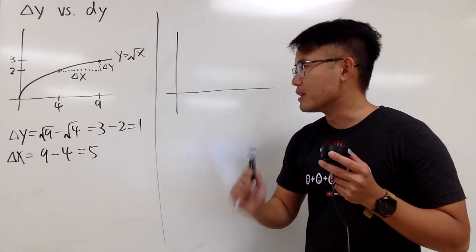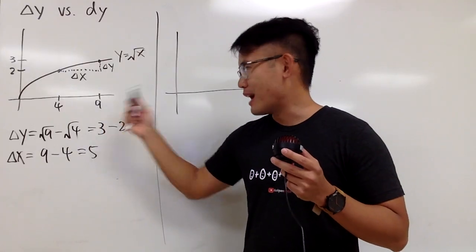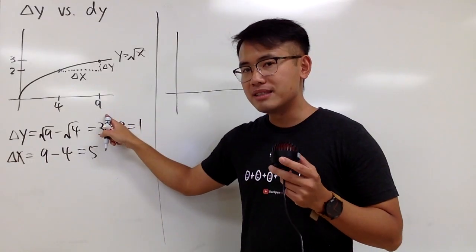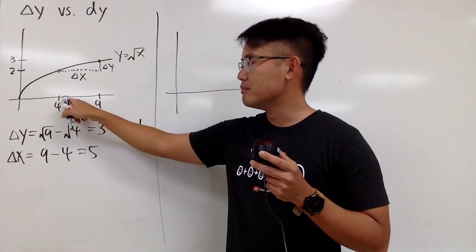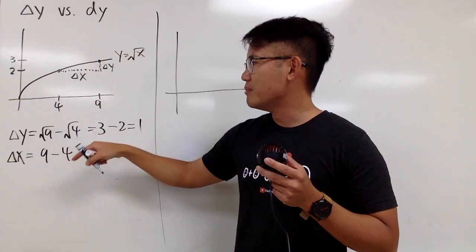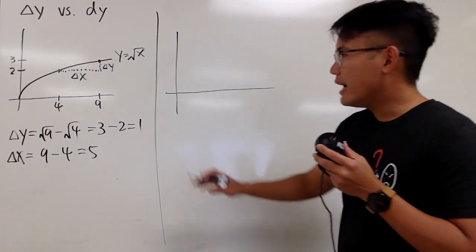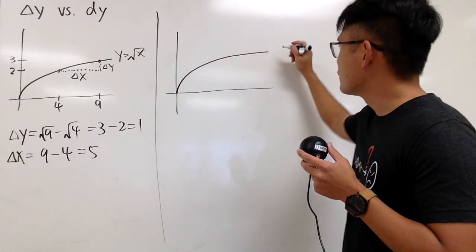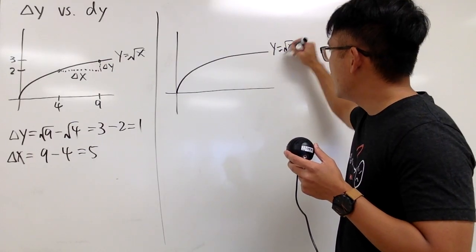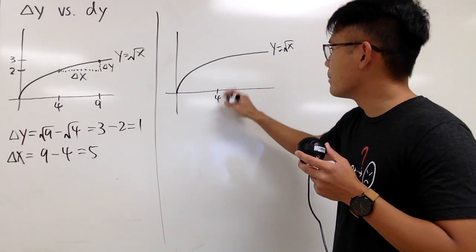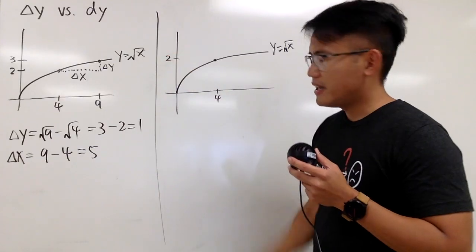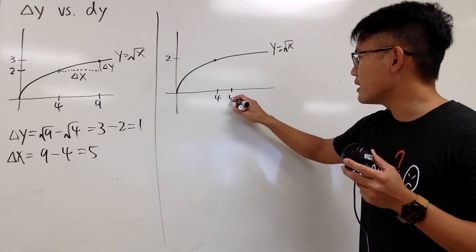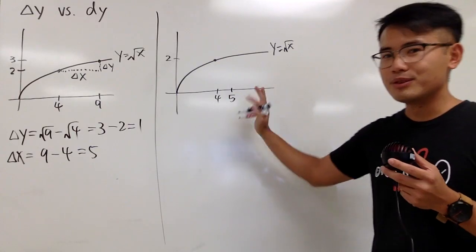This right here was so easy because I chose 9 on purpose to just make everything easy. And that's it. What if I didn't pick 9, but instead maybe I pick 5, maybe I pick 7? This is harder. And I will just draw the picture right here again. I will still have the same square root picture, of course. And I still have the 4,2. And let me just say I am going to pick the x value being 4.5. Let's pick 5, yeah? Just 5, no 4.5, just 5.